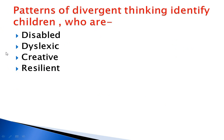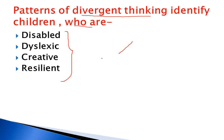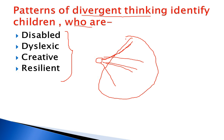The last question is: patterns of divergent thinking identify which type of children? Divergent thinking means thinking that originates from one source and goes in different directions — unlimited scope of thinking. This is seen in creative students. Creative children have divergent thinking patterns, so the correct option is option number three: creative children.